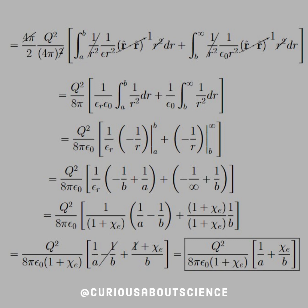Recall that the definition of epsilon is epsilon R times epsilon naught. So again, we can factor 1 over epsilon naught out. And then we just integrate and evaluate as such, leaving us with the final answer of Q squared over 8 pi epsilon naught, 1 plus chi E, multiplied by 1 over A plus chi E over B.